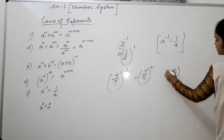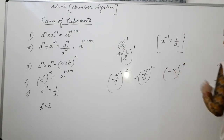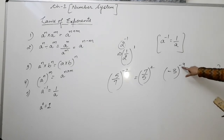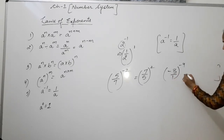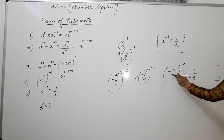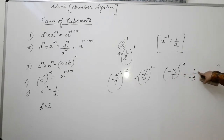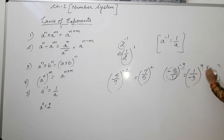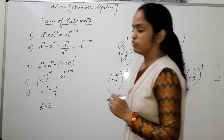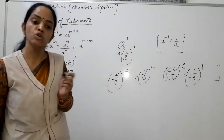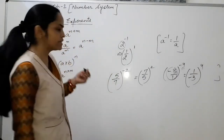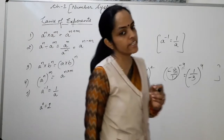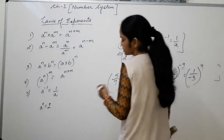For example: minus 3 raised to the power minus 4. To make this power positive, the reciprocal of minus 3 is 1 upon minus 3, which is the same as minus 1 upon 3, raised to the power 4. This is the way you can convert any negative power to a positive power.